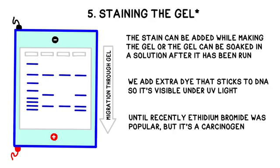Up until recently, ethidium bromide was used, but since it's now known to be a carcinogen, other stains are more common, particularly in high school and undergraduate labs. Once the gel is stained, it's easy to read it under a UV light.